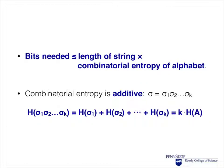This means that for strings, the number of bits needed to transmit this string is bounded by the length of the string times the combinatorial entropy of the alphabet. Mathematically, this points to a property of entropy that will be important later on, namely that entropy is additive. Assume that our string σ is made up of the characters σ₁ up to σₖ. Then the entropy of that string is the sum of the entropies of the individual characters, and in this case, it's just k times the entropy of the alphabet.